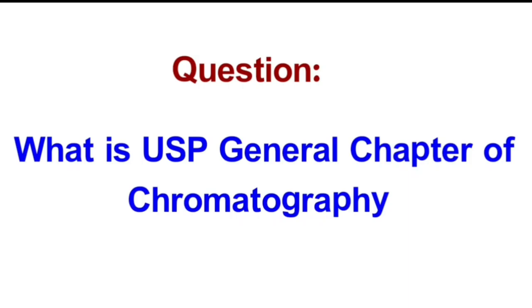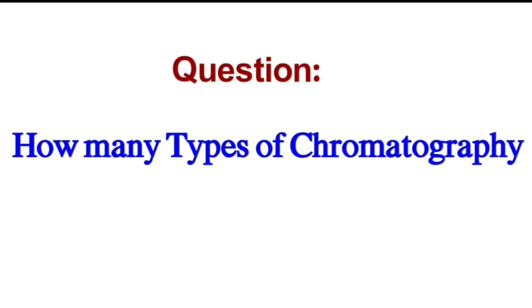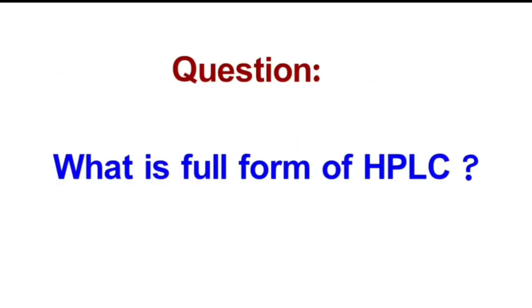Question: What is USP general chapter of chromatography? Answer: USP general chapter number 621. Question: How many types of chromatography? Answer: There are two types of chromatography: one is liquid chromatography, the second one is gas chromatography.